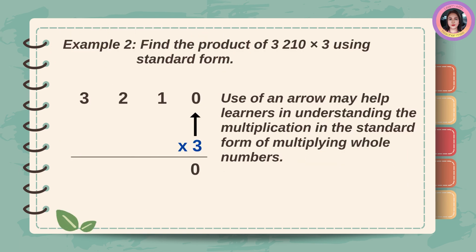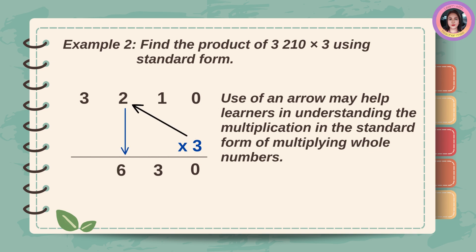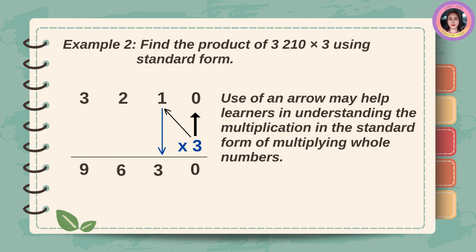Let's find the product of 3,210 times 3 using standard form. 3 times 0 is equal to 0, 3 times 1 is equal to 3, 3 times 2 is equal to 6, and 3 times 3 is equal to 9. The answer is 9,630.